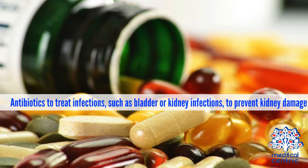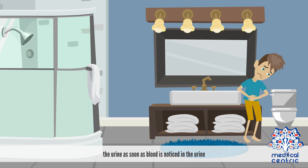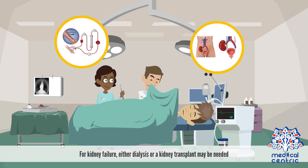Antibiotics are used to treat infections such as bladder or kidney infections. To prevent kidney damage, drinking lots of fluids, preferably water, helps to dilute the urine as soon as blood is noticed in the urine. For kidney failure, either dialysis or a kidney transplant may be needed.